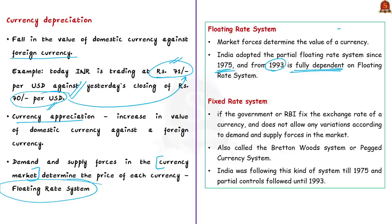When market forces determine the value of a currency, that system is called the floating rate system. India adopted the partial floating rate system since 1975, and from 1993 India has been fully dependent on the floating rate system. The other type is the fixed rate system — also called the Bretton Woods system or pegged currency system — where a government or central bank fixes the exchange rate without allowing variation. India followed this system until 1975.